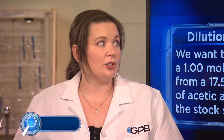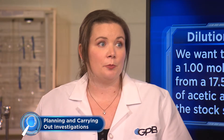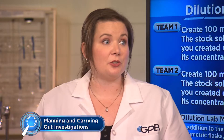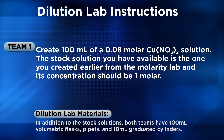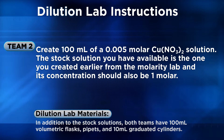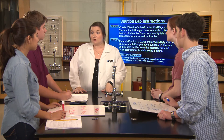Now, what I'd like for you to do is to make a dilution of your own. Both groups will use the volumetric flasks and distilled water. Team 1, create 100 milliliters of 0.08 molar copper nitrate from your stock solution of 1 molar copper nitrate. Team 2, create 100 milliliters of 0.005 molar copper nitrate solution from your stock solution of 1 molar copper nitrate. Once I've approved your procedure, you can get started.